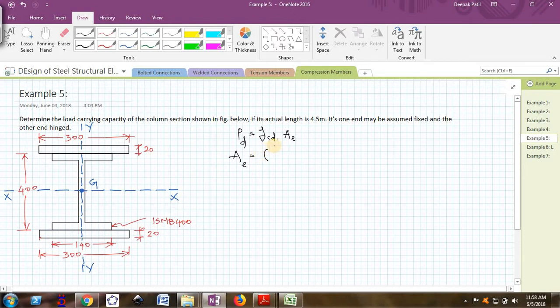The cross section of the ISMB 400 is 7846 mm² plus two plates of 300 by 20. This whole thing comes out to be 19846 mm². So 19846 mm² is the total cross section area.